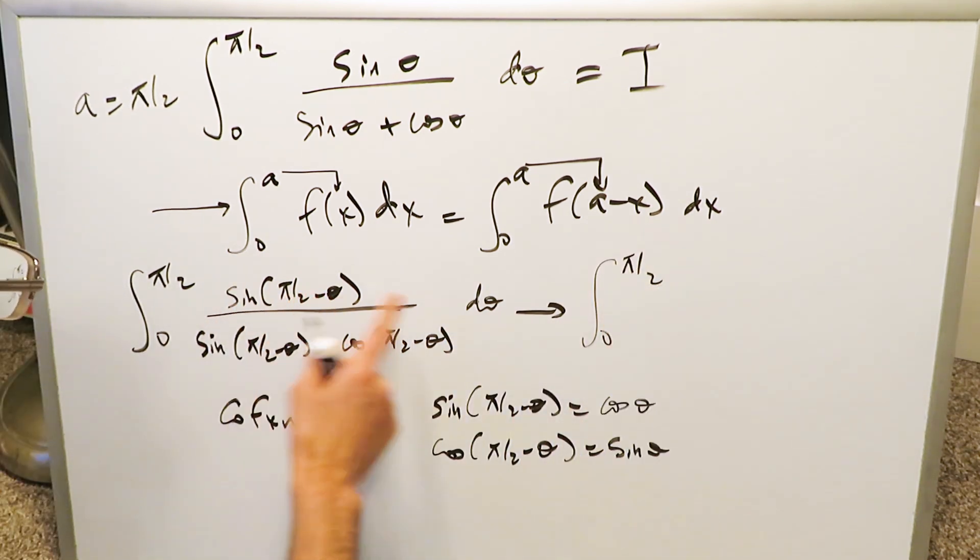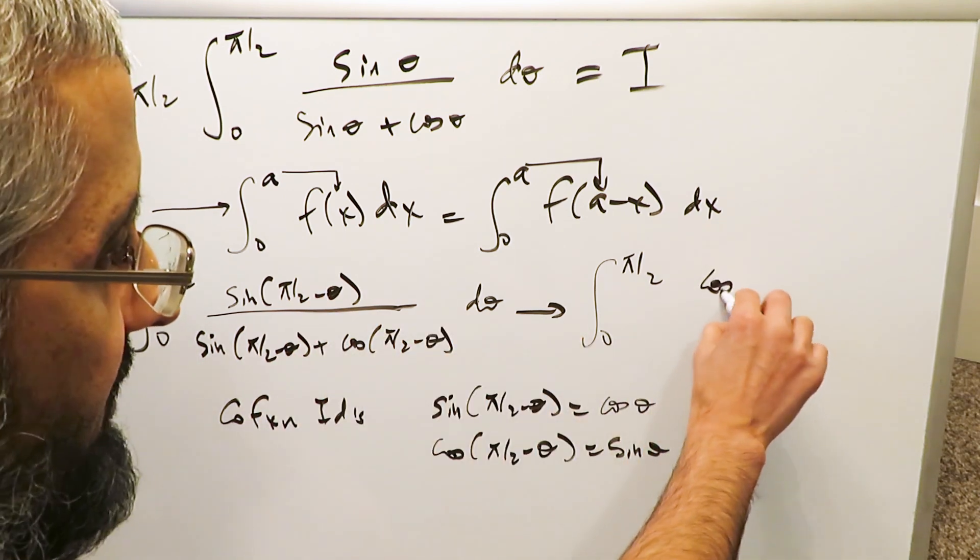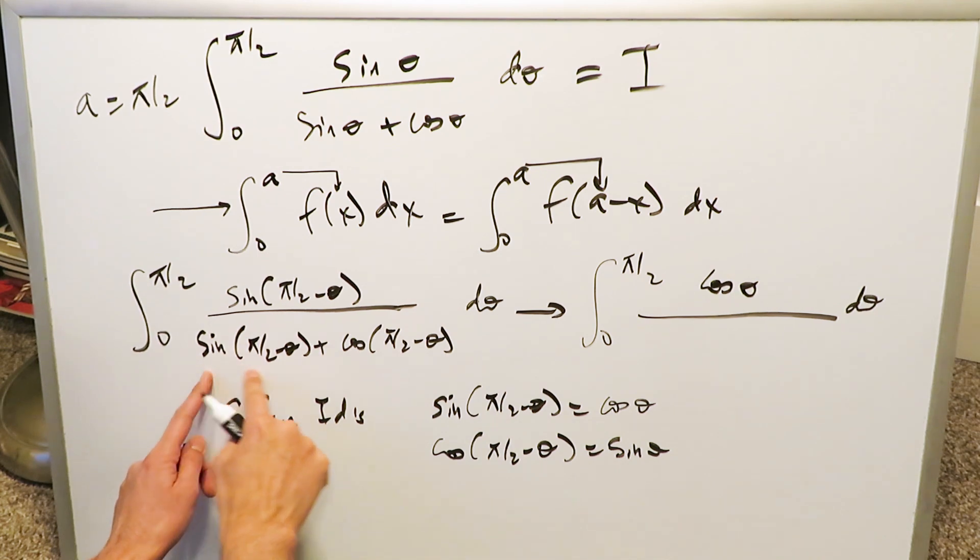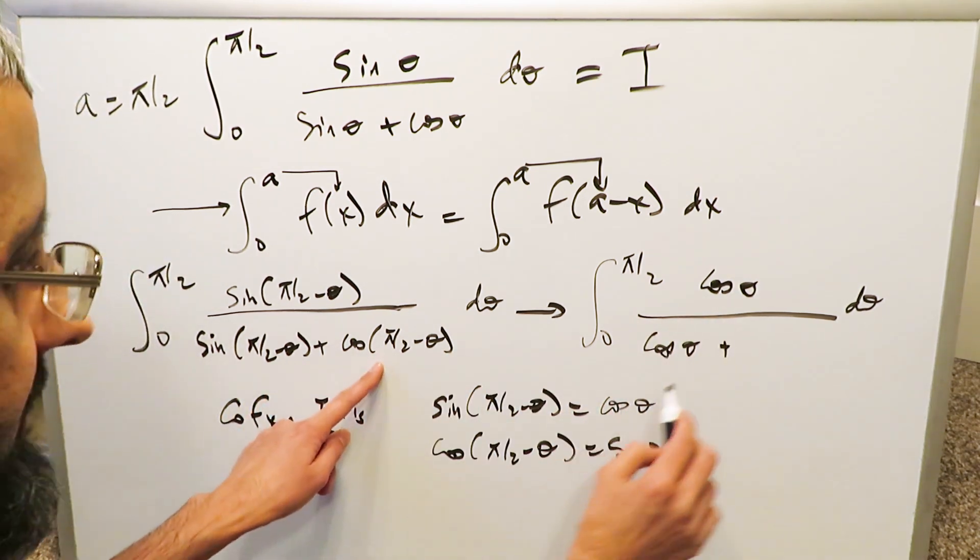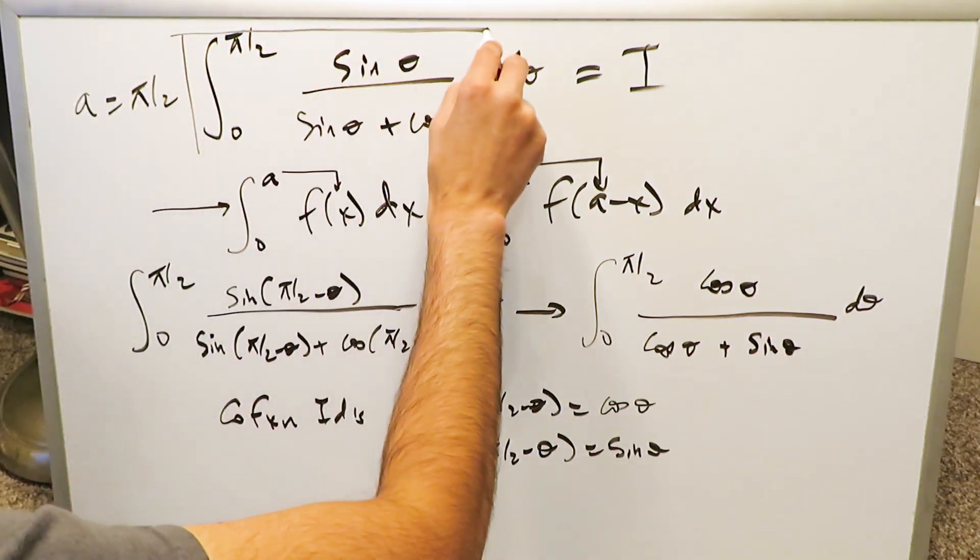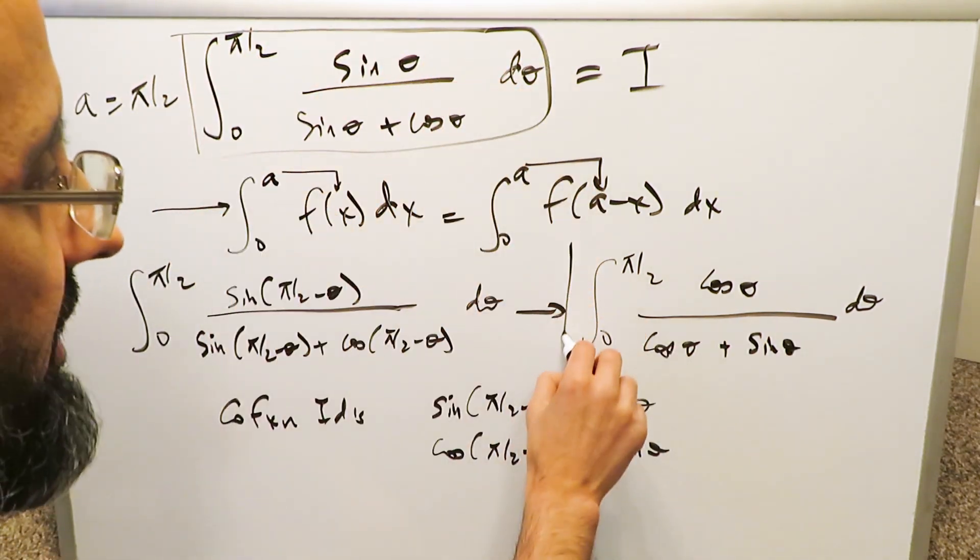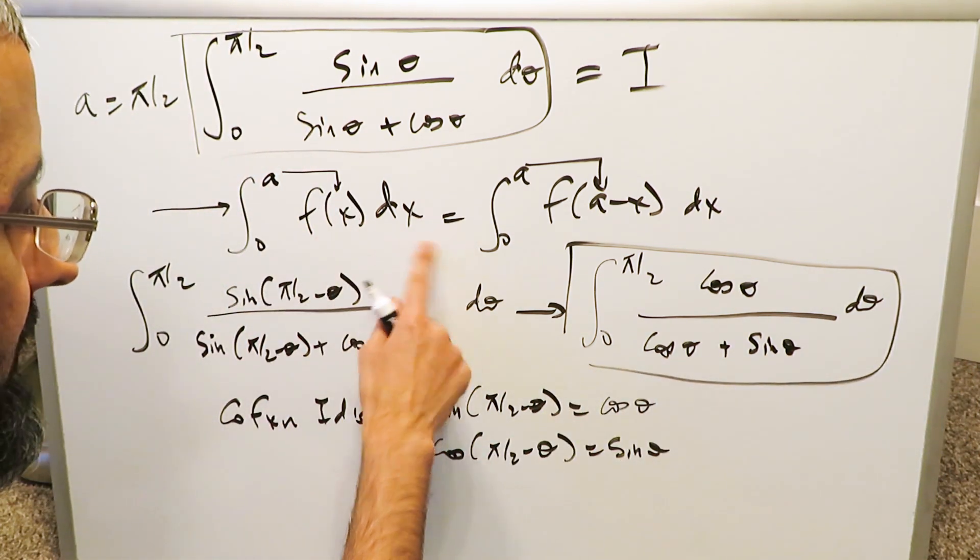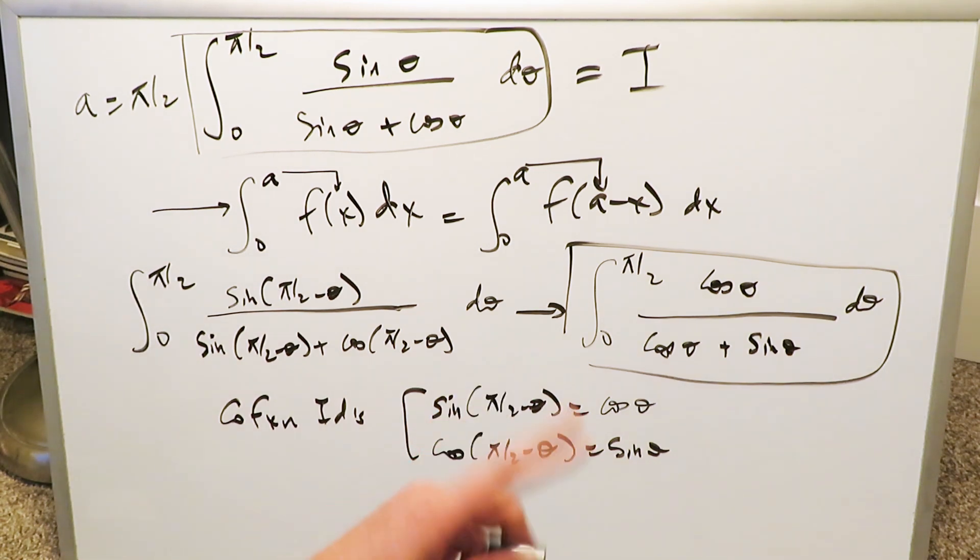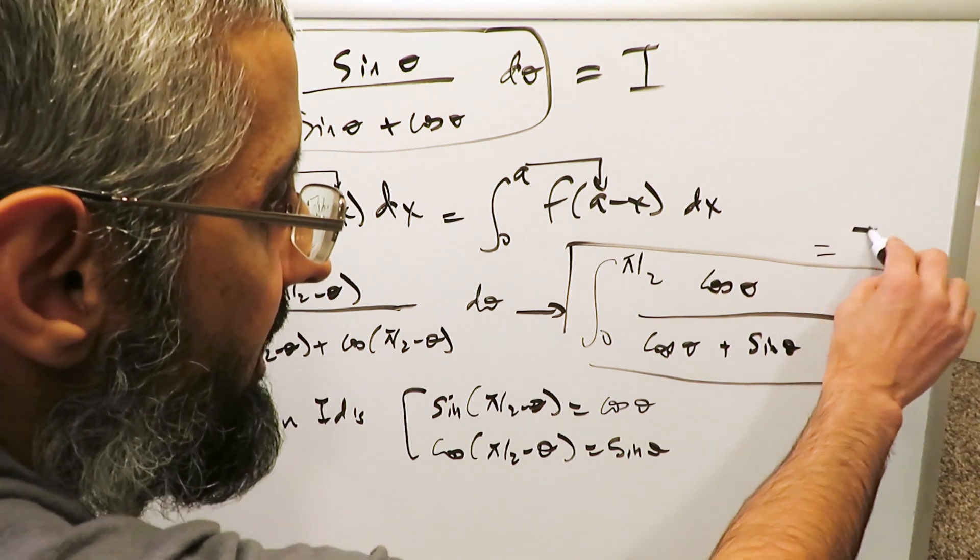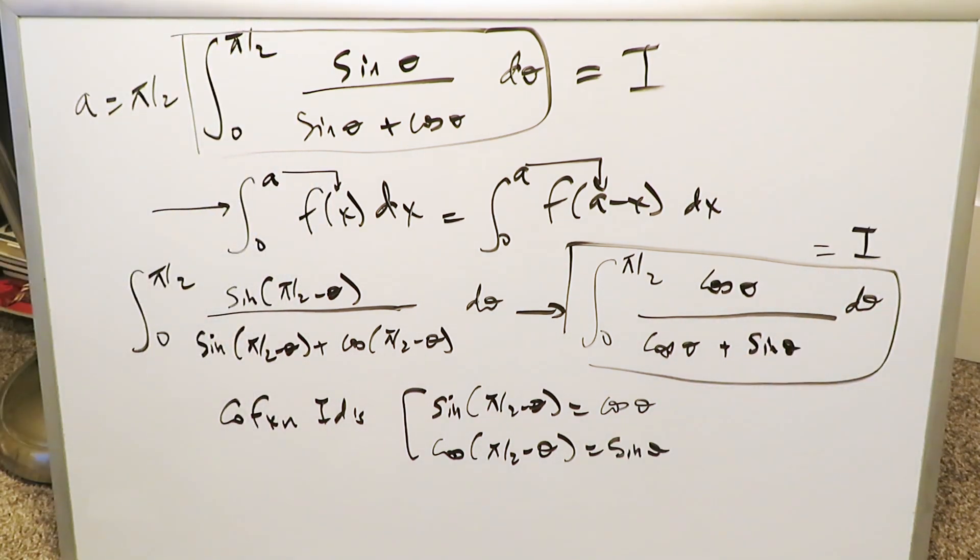When you manipulate it, sine(π/2 - θ), you're getting a cosine θ in the numerator. And look what's happening here in the denominator. This is going to give you a cosine θ, and this right here is going to give you a sine θ. Now this right here was my original integral. Now look how my original integral is modified into this. By means of this integral property and by means of the co-function identities, I've manipulated and changed it into this. But this also represents my original integral. It's modified, but it is equivalent to your original integral.